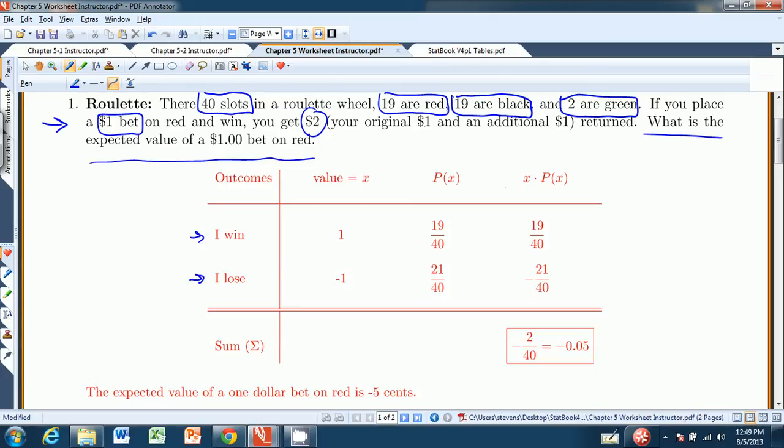The probabilities are pretty easy to figure out, because there's 19 red slots on a total of 40. So that's the probability of getting a red, 19 out of 40. The probability of getting a non-red is the remaining 21 non-reds over 40. Notice these probabilities add up to 1. And then the formula, which is from Chapter 5.1, looks like this: the expected value is equal to the sum of the x's times the p of x's.